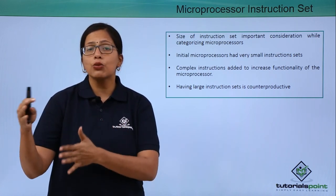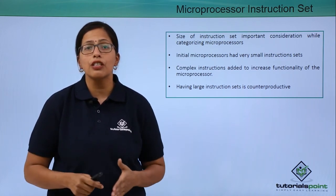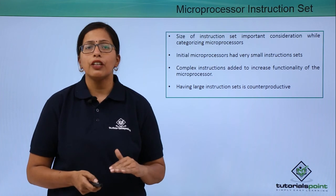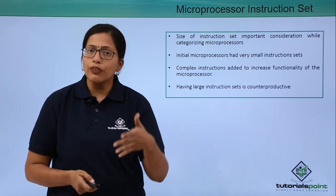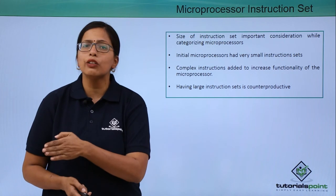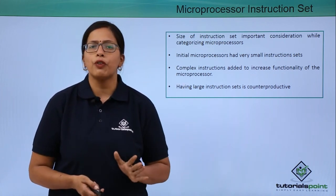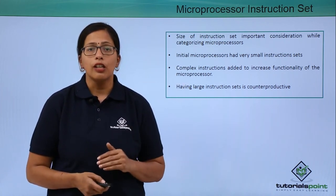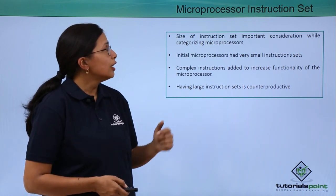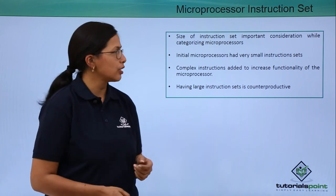But after the instruction set increased to a certain level — say 100 or 200 instructions — it was realized that this was very counterproductive. Instead of increasing the speed and performance of the microprocessor over time, it actually decreased performance. So let's see what the different categories of microprocessors are, based on the instruction set.